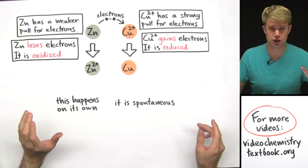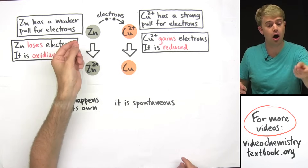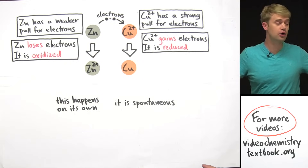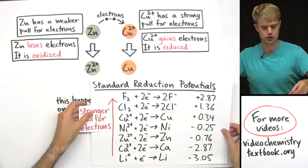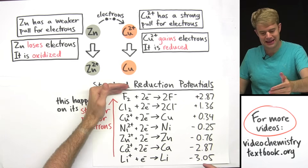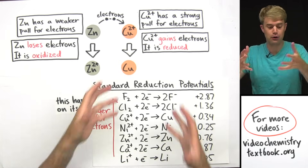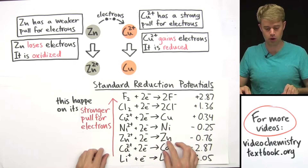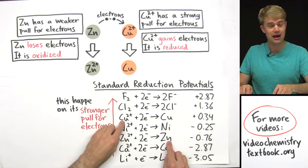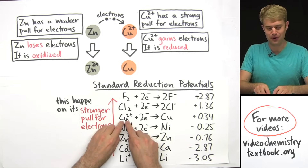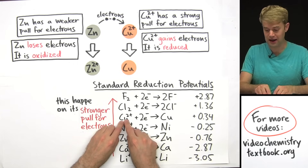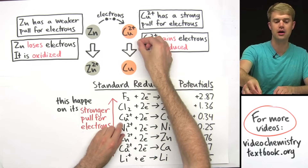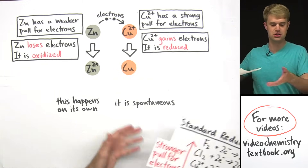A really common question is: how do you actually know that the electrons are going to move from zinc to copper? How do you know that copper has a stronger pull for electrons? Well, you can look it up. There is a chart we'll be using a lot in electrochemistry called the standard reduction potentials, and it lists elements and compounds in terms of how strongly they want to pull electrons. The higher you go, the more these elements want to pull electrons. Copper 2+ is up here and zinc is down here. If copper is above zinc, then copper is going to be stealing electrons from zinc — copper has a stronger pull. That's how we know this reaction is going to happen on its own.